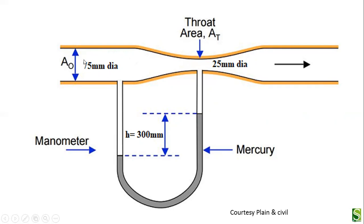As the fluid moves into the throat area, the area is larger upstream giving less velocity. As the fluid moves to the throat, the area decreases and velocity increases. Due to this increase in velocity, there occurs an increase in pressure differential measured by the manometer.